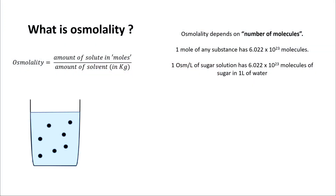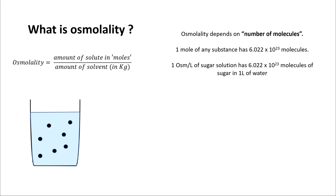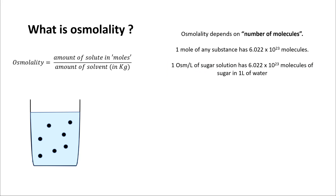So what is osmolality? Osmolality is the amount of solute, measured in moles, divided by the amount of solvent in kilograms. Osmolality depends on the number of molecules in a solution, and as you know, one mole of any substance has 6.02 × 10²³ molecules — that's Avogadro's number. So one osmol per liter of sugar will have 6 × 10²³ molecules of sugar in one liter of water.